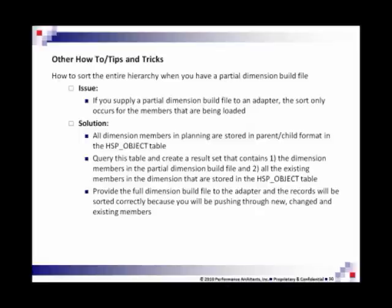Let's say an example of this: you have a partial dimension build file. Let's say you're a large company and you have 30,000 people. People are going to be coming and going and maybe you don't have visibility into all that — you don't have access to all that information to do a full dimension build. So you know that you're going to get 10 new people in this department, so you're essentially just doing the adds.